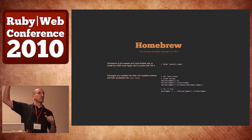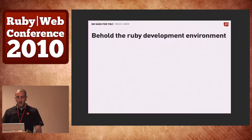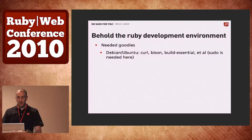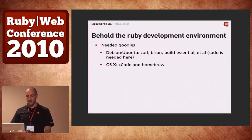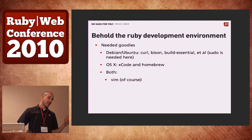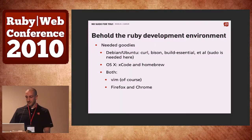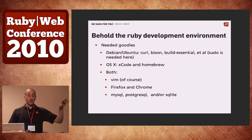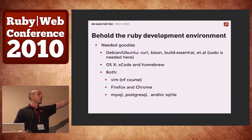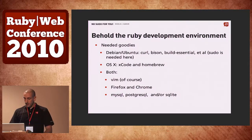How many people know or are using Homebrew? Cool. So, next — here are the needed goodies for your Ruby development environment. For Ubuntu: curl, bison, build-essential, all that stuff to be able to compile. In OS X you need Xcode and Homebrew. And of course in both you'll want an editor — Emacs, or whatever you want. Firefox and Chrome, MySQL, Postgres, SQLite, Mongo, Couch — whatever. All those are already in brew, so all you have to do is brew install mongodb and you're done.